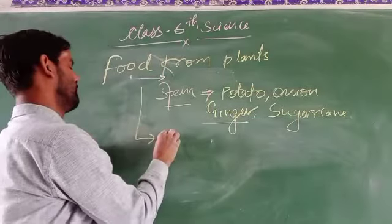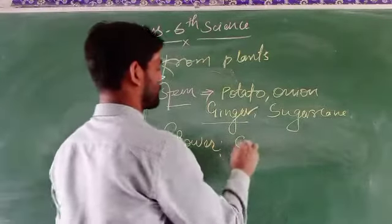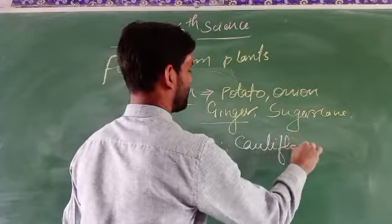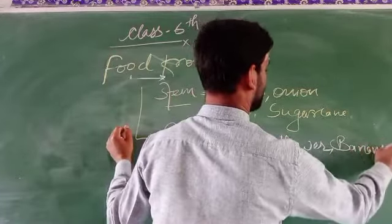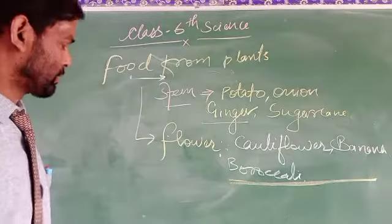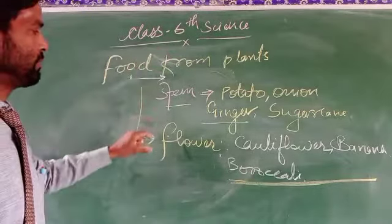Next one is flower. What are the different flowers that can be used in food materials? Like cauliflower, banana flower, and broccoli — these are the different forms of a flower that can be eaten as a food material. So we have: root, leaves, stem, flower, and fruits.